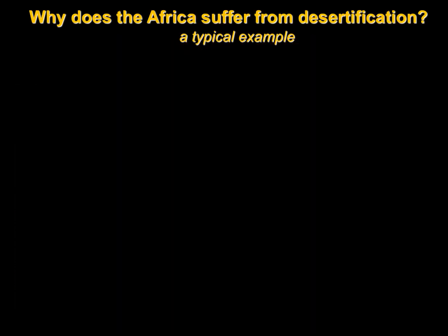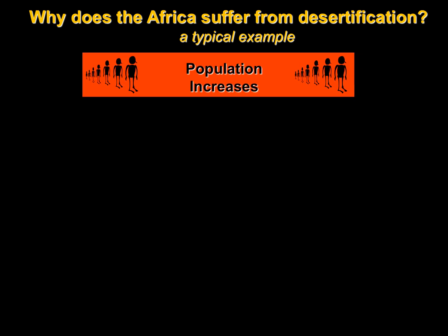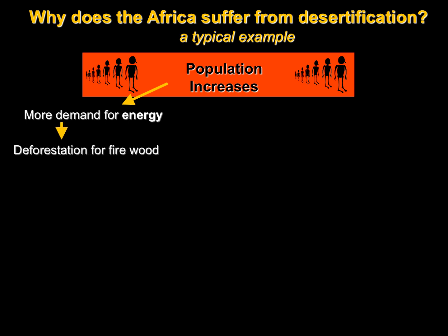Let's take a look at a typical example of how desertification is caused in Africa. It usually starts with population increase. As the population increases, we have an increasing demand on available resources. A higher population means there's more need for energy, and since the primary energy source in many parts of Africa is firewood, we see more deforestation in order for people to heat their homes and cook their food.